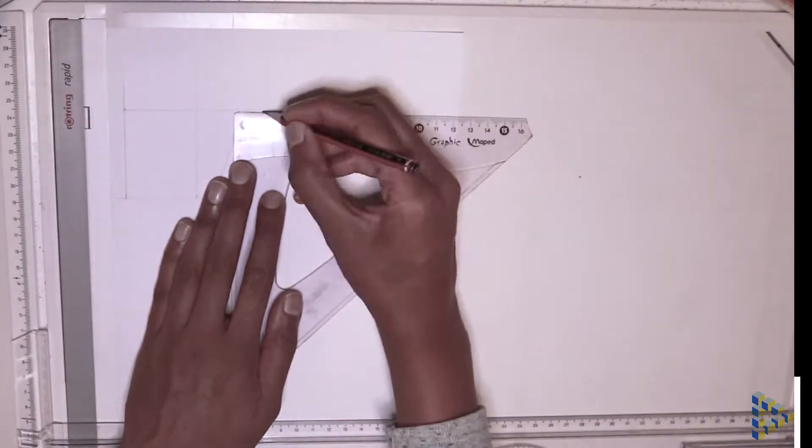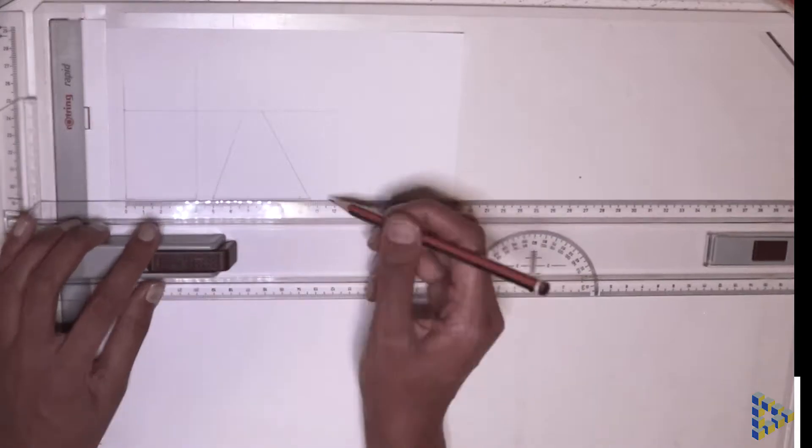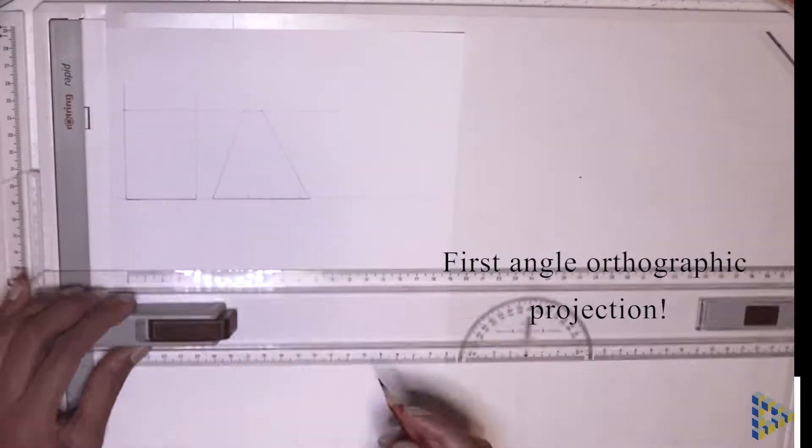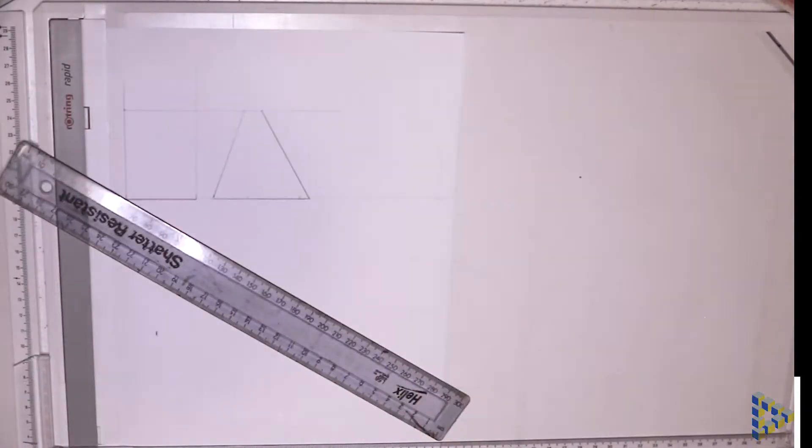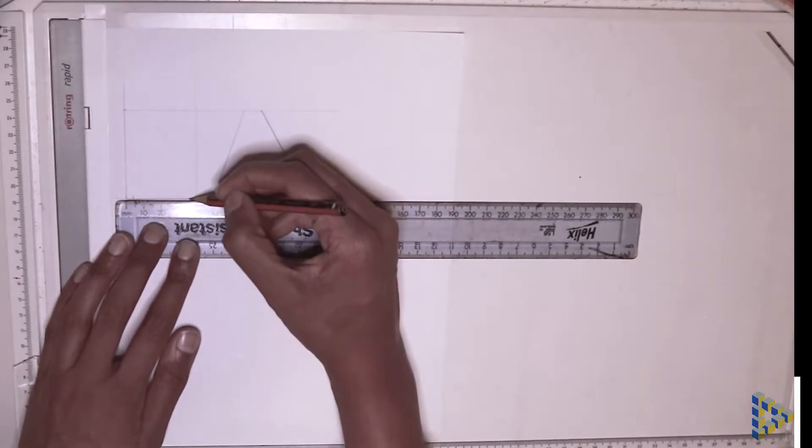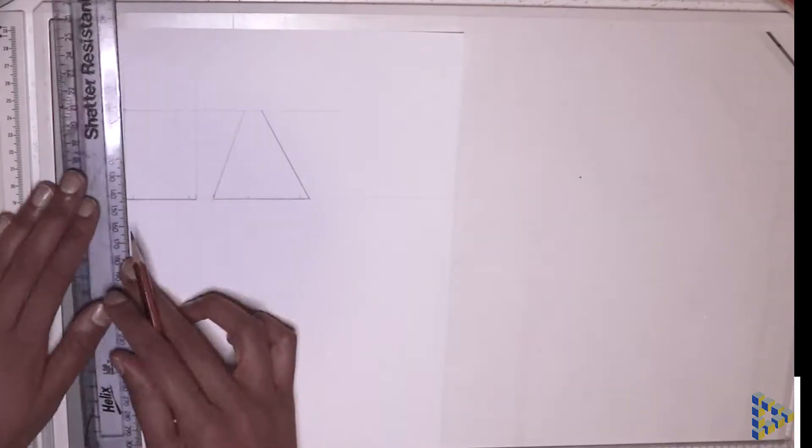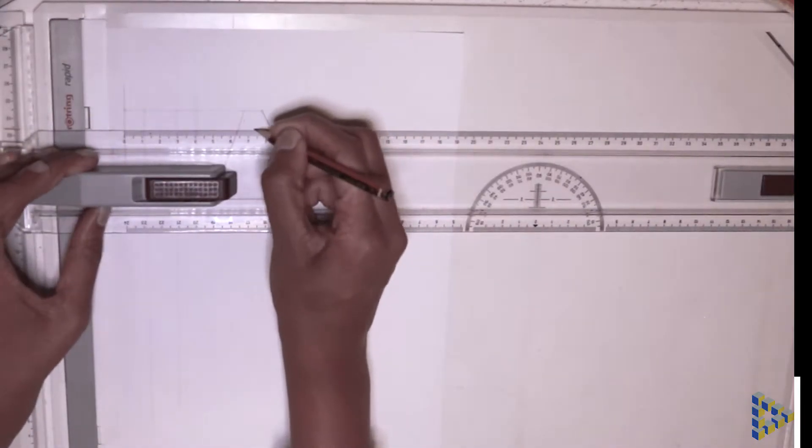I'm starting off by drawing the front view and the left side view, just estimating dimensions so that I can get to the crux of the problem. The question that I asked you guys in class is what does the plan view look like?